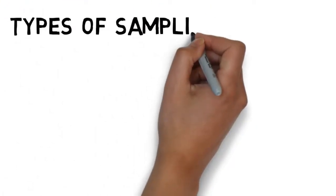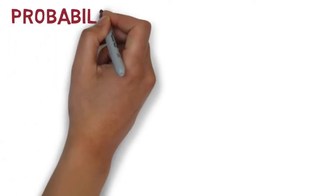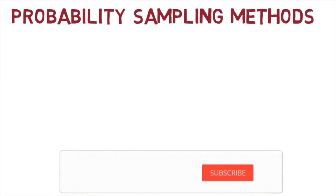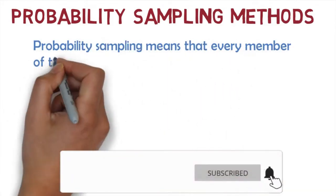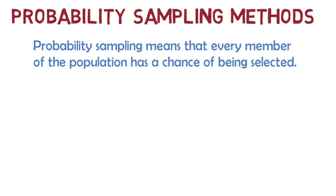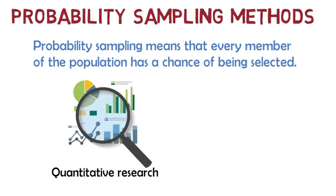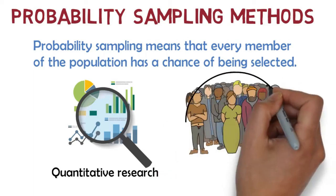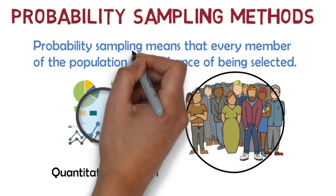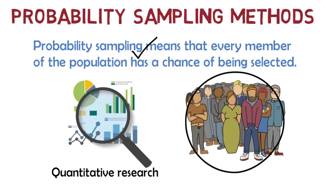There are two types of sampling methods. Firstly, we have probability sampling methods. Probability sampling means that every member of the population has a chance of being selected. It is mainly used in quantitative research. If you want to produce results that are representative of the whole population, probability sampling techniques are the most valid choice.